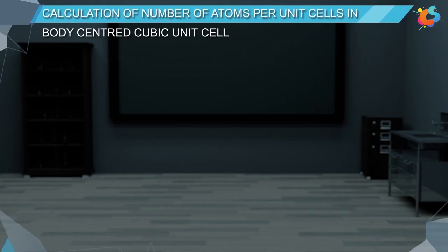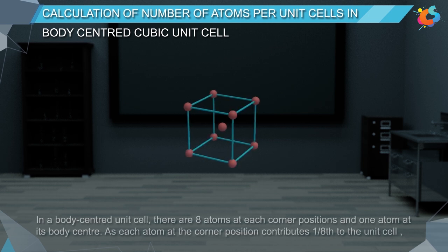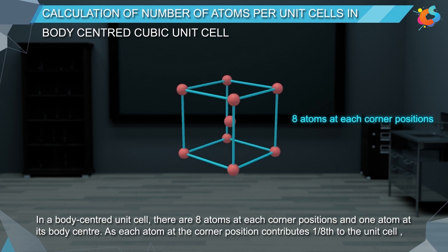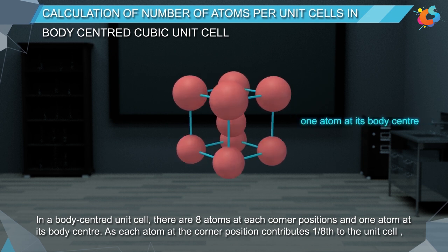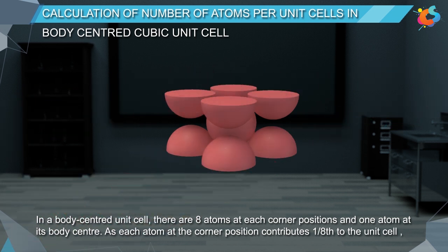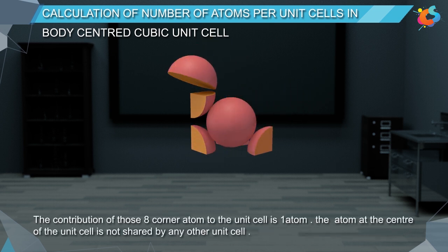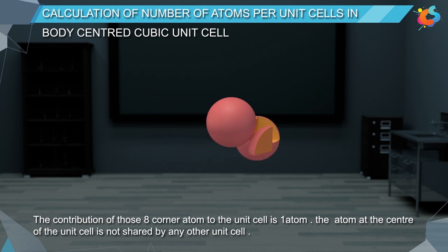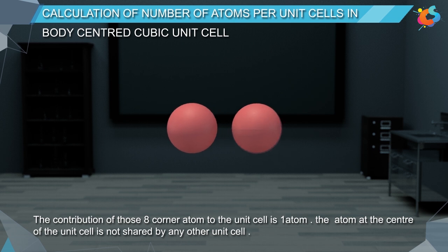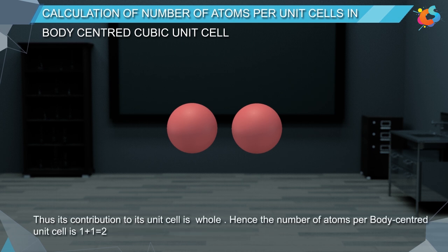Calculation of number of atoms per unit cell in a body-centred cubic unit cell. In a body-centred unit cell, there are eight atoms at each corner position and one atom at its body centre. As each atom at the corner position contributes one-eighth to the unit cell, the contribution of those eight corner atoms is one atom. The atom at the centre of the unit cell is not shared by any other unit cell, so its contribution to its unit cell is whole. Hence, the number of atoms per body-centred unit cell is 1 plus 1, which equals 2.